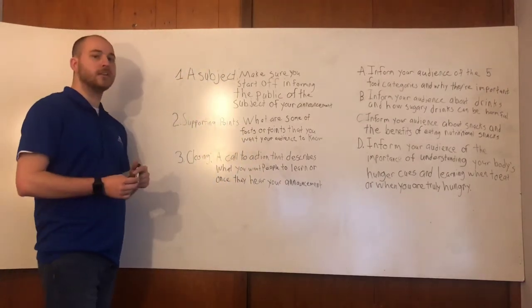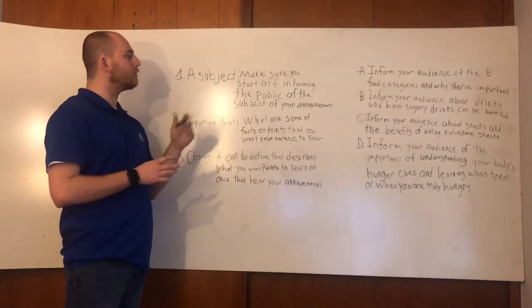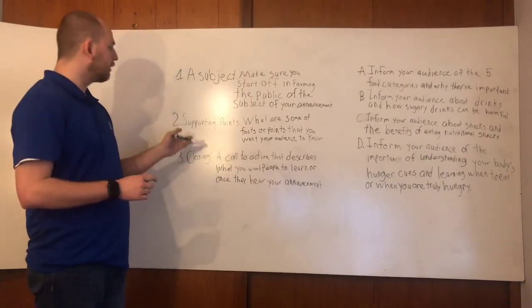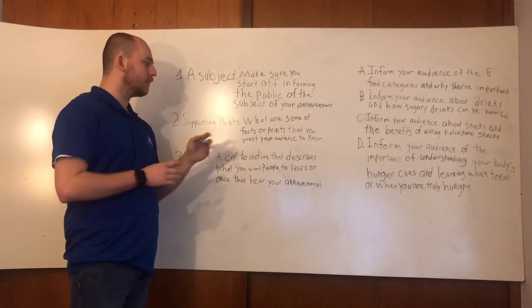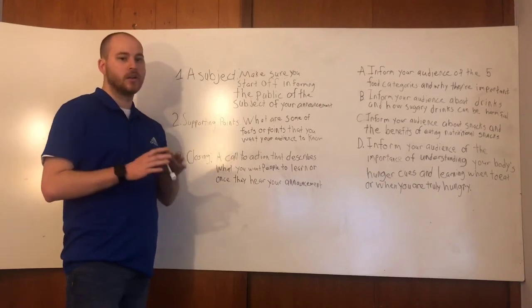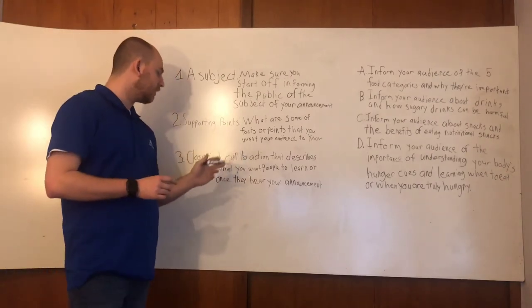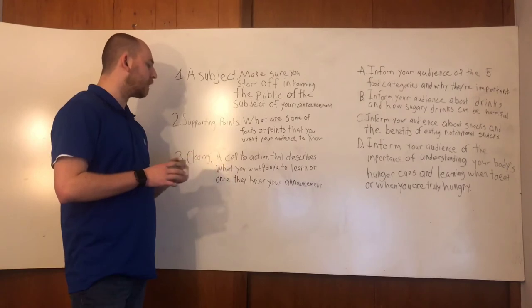So the first thing you need for your PSA is a subject. Make sure that you start off informing the public of the subject of your announcement. The next thing you will need are some supporting points. What are some of the facts or points that you want your audience to know? The final thing you will need for your PSA is a closing. A call to action that describes what you want people to learn once they have heard your announcement.